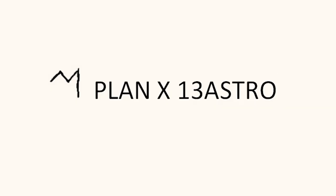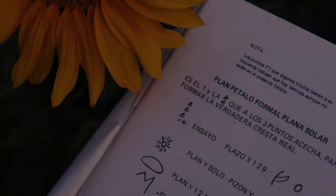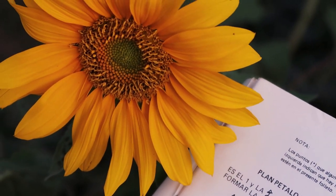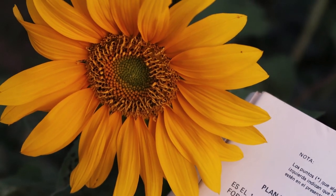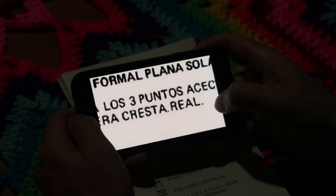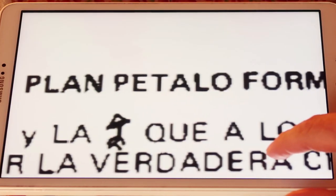Así aparece, como si fueran letras de computadora, de izquierda a derecha, y después se terminan borrando al revés, de derecha a izquierda, y vuelven a aparecer en el mismo renglón. En la parte superior del texto dice: para formar la verdadera cresta real.